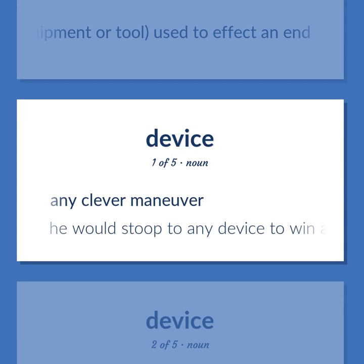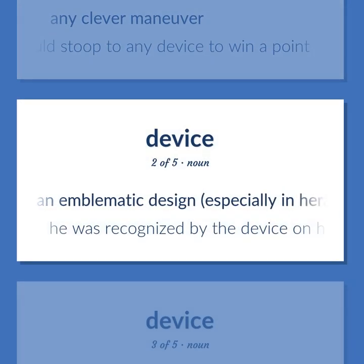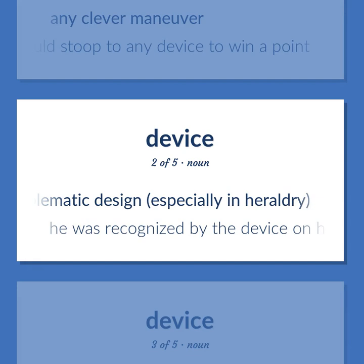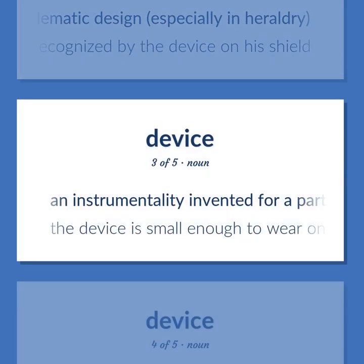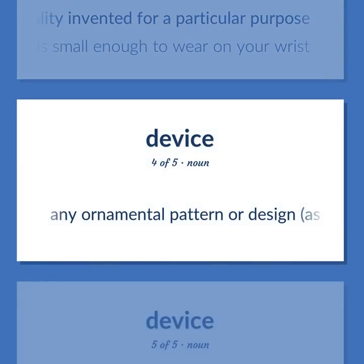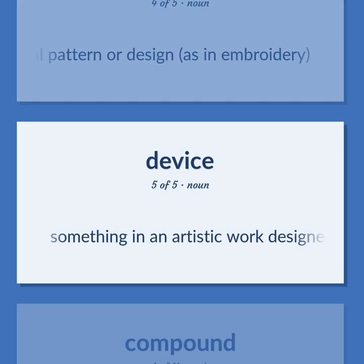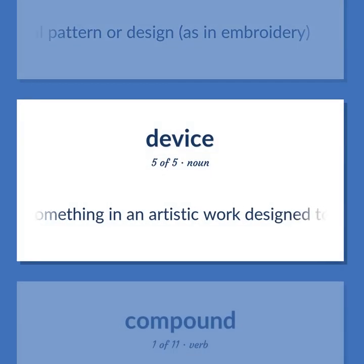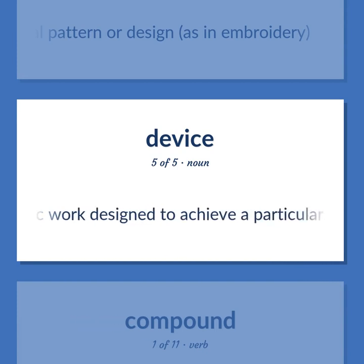Device: he would stoop to any device to win a point. An emblematic design, especially in heraldry — he was recognized by the device on his shield. An instrumentality invented for a particular purpose — the device is small enough to wear on your wrist. Any ornamental pattern or design, as in embroidery. Something in an artistic work designed to achieve a particular effect.